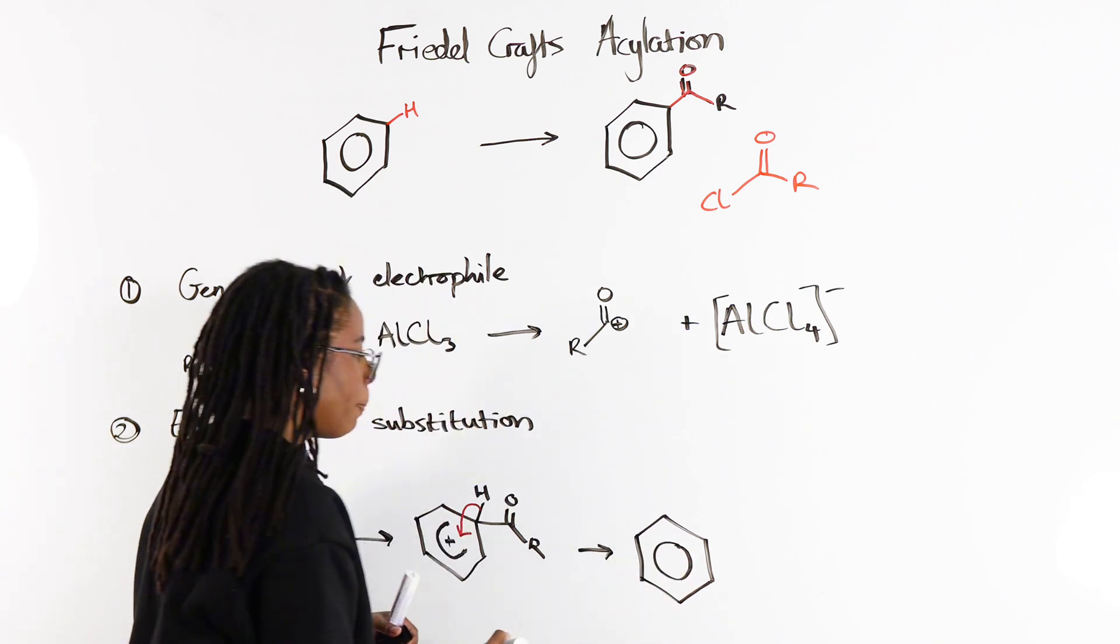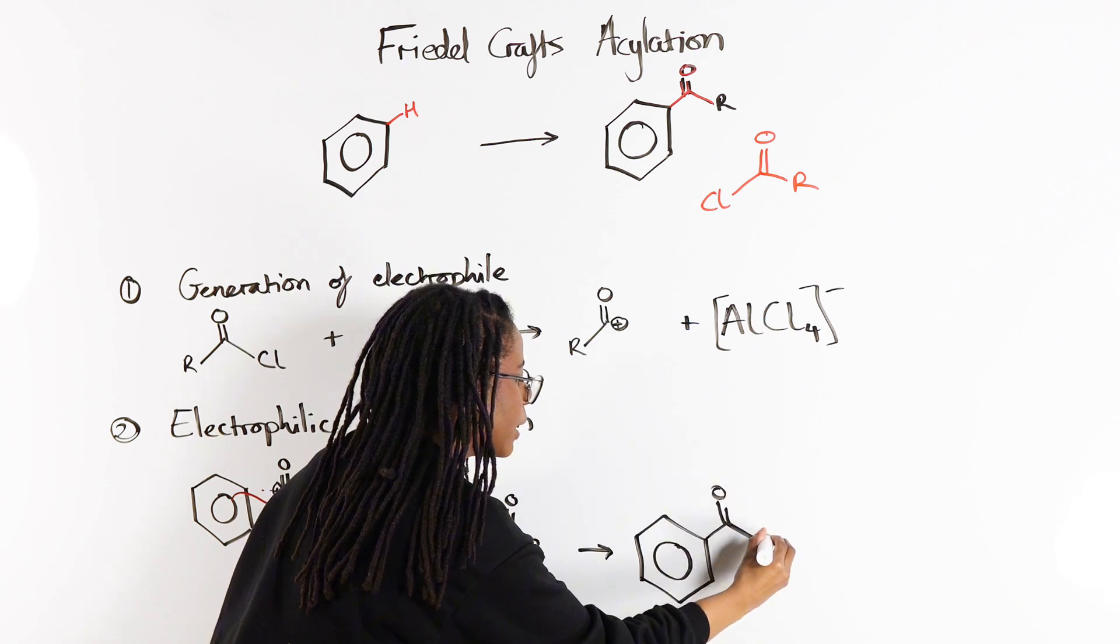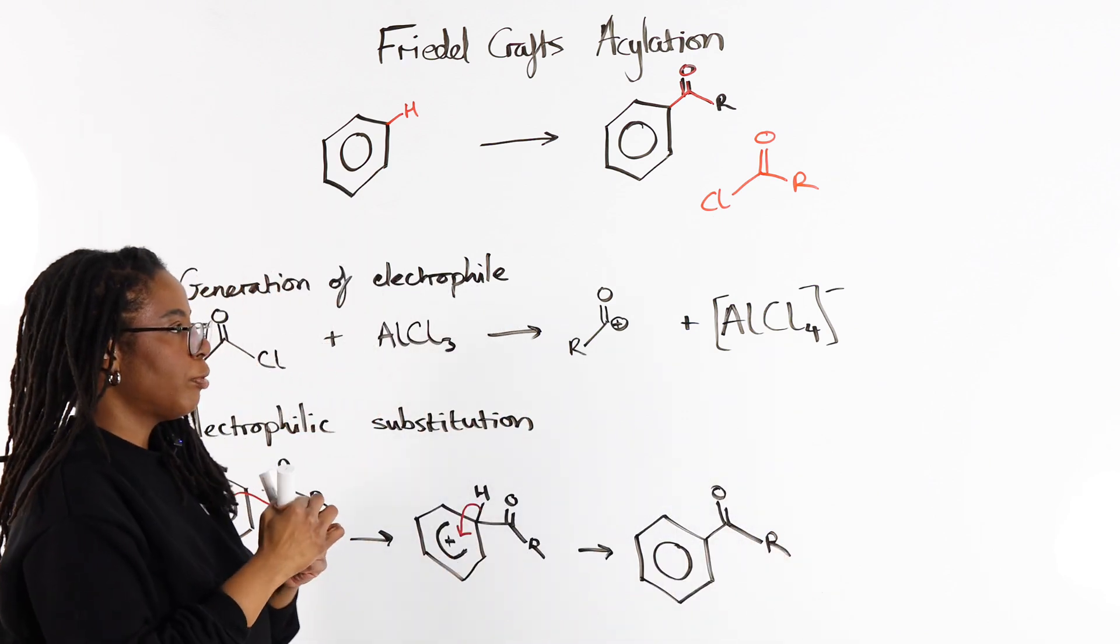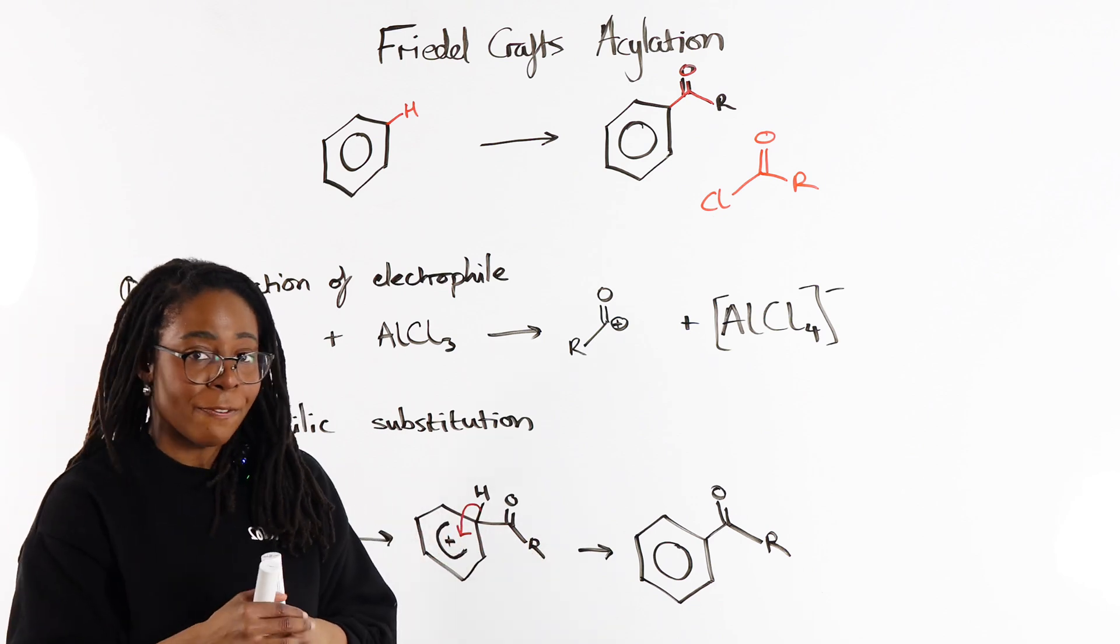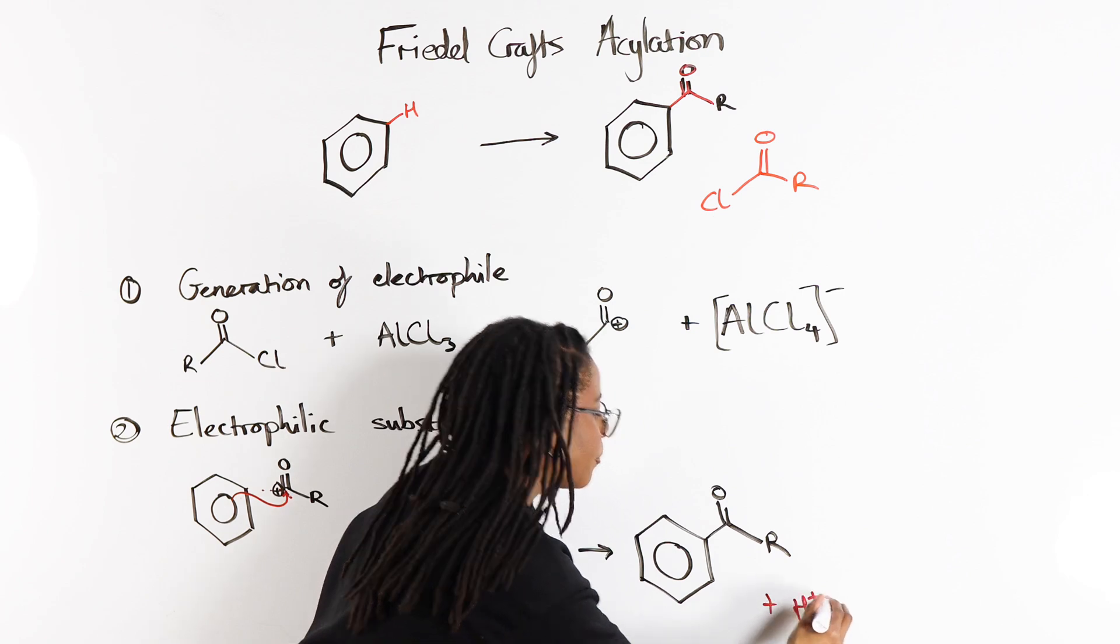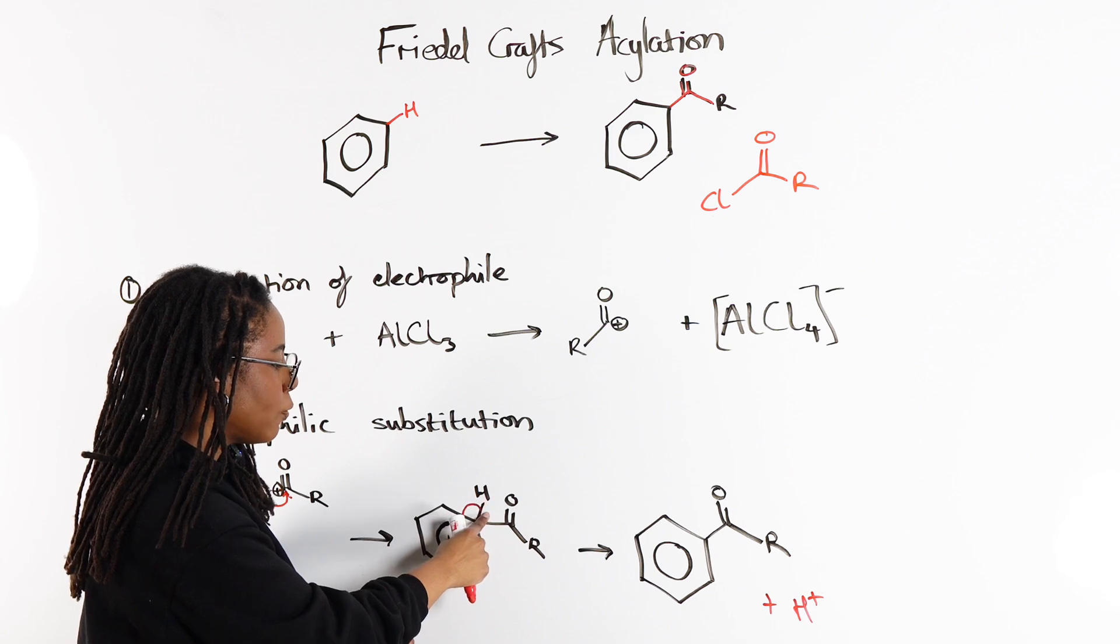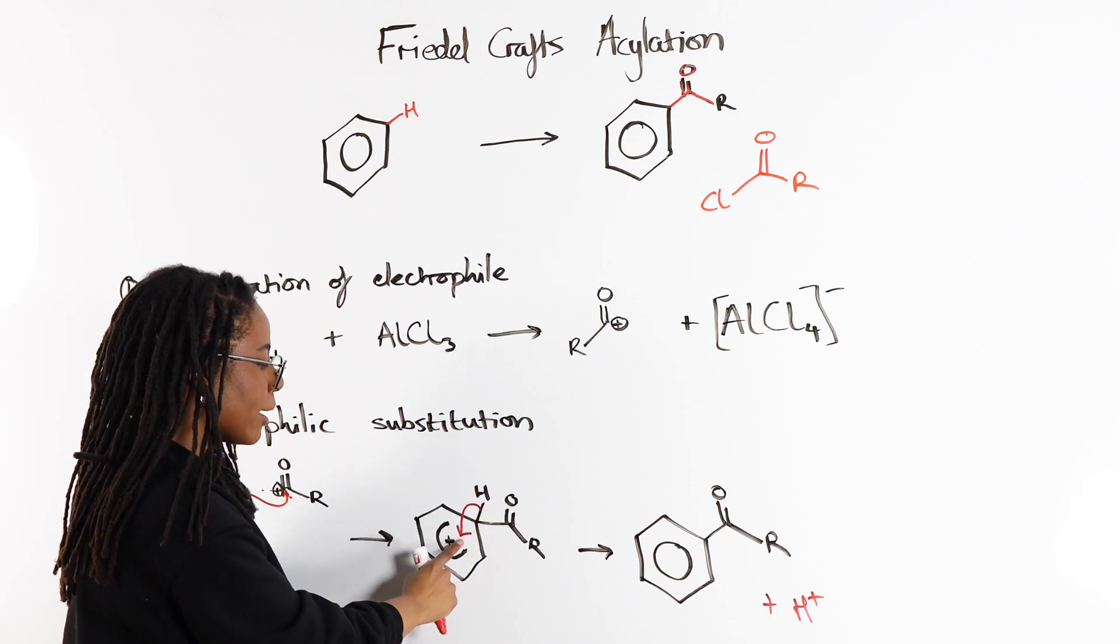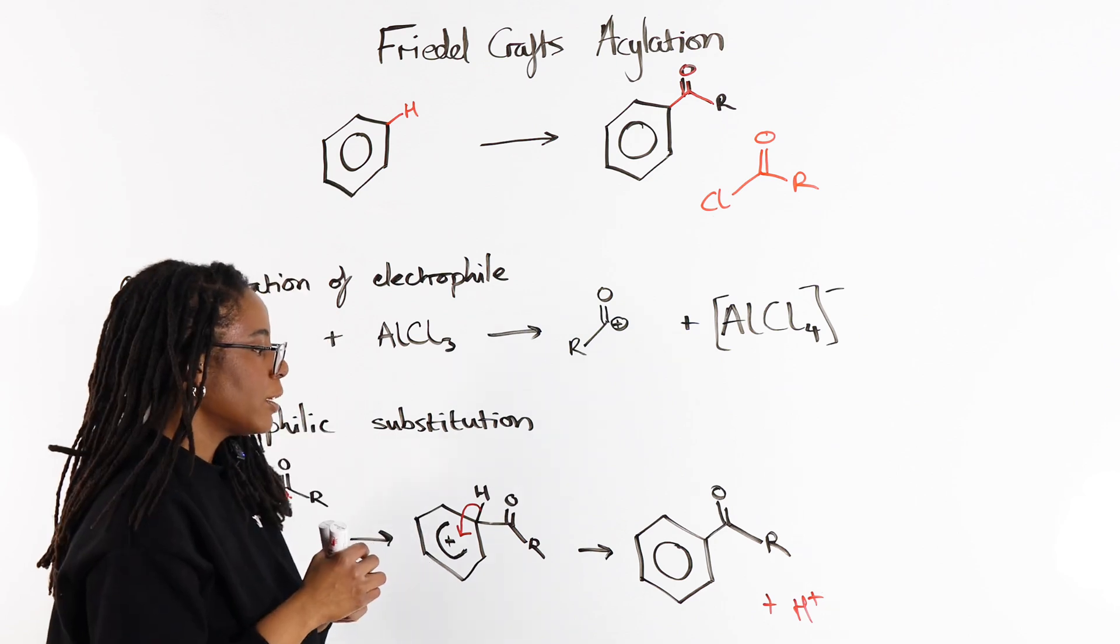We've got our pi delocalized ring back and now we've got this as our acylated product. Now we've also got this H plus that fell off. It's H plus because both of the electrons that were once in this covalent bond are now back over here. So this hydrogen doesn't have any electrons anymore, so it's got a positive charge.